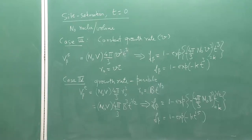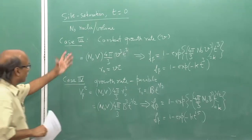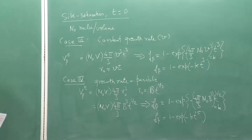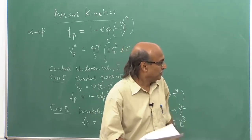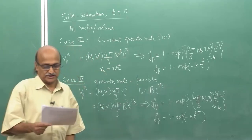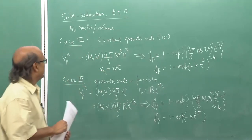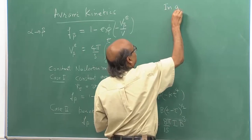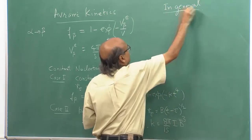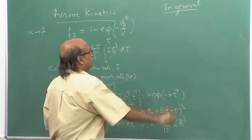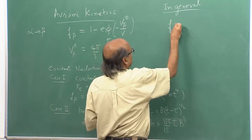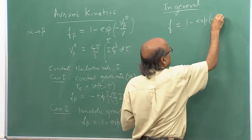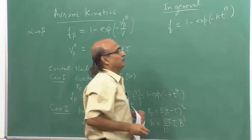So in these four cases that we have considered, we have got different exponents for t: 1.5, 2.5, 3, and 4. There is a whole range of exponents we get, and we can try other combinations of nucleation rate and growth rate. For example, sometimes the nucleation rate itself could be considered as an exponential function of time, which could also be plugged in to yield a somewhat different relationship. In general, the Avrami relationship can be written as F = 1 minus exponential of minus K × t^n.